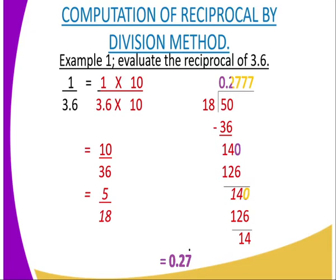Once you multiply, you will get the numerator as 10 and the denominator becomes 36. After simplifying by dividing the numerator by 2, you will get 5, and dividing the denominator by 2, you will get 18. Then, using the long division method, you divide 5 by 18. You find that 18 is greater than 5, and therefore it is not possible to divide directly.